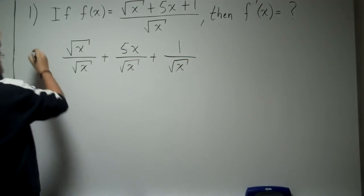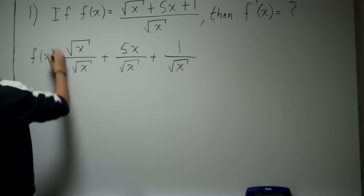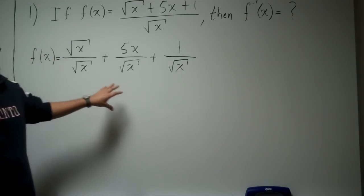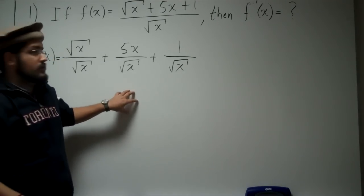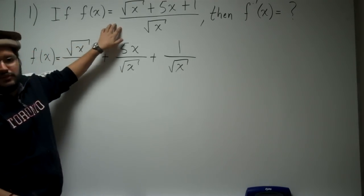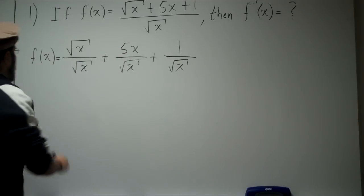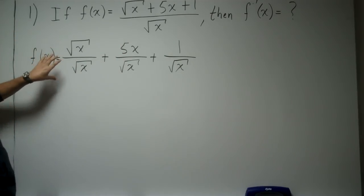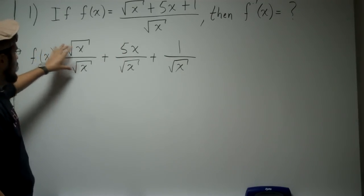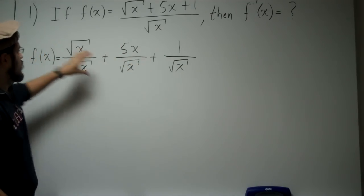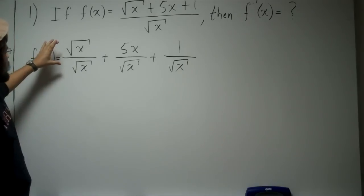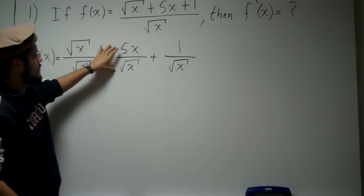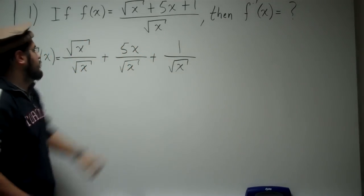Okay, so there's our new function here. Now we want to go ahead and take the derivative of this function, which is the same thing as taking the derivative. We know that if we can take the derivative of this whole function, we can just take the derivative of each part and add them together.